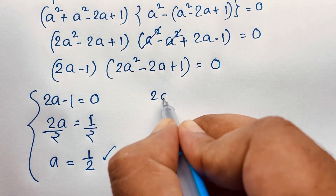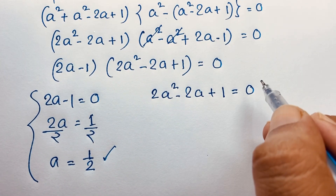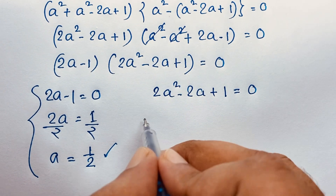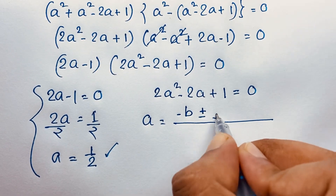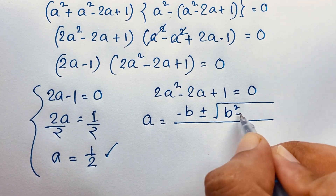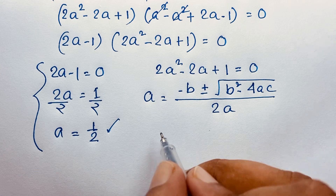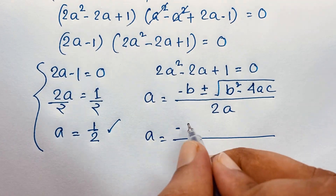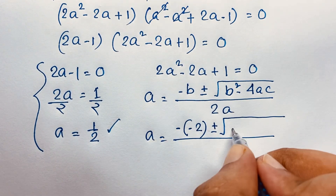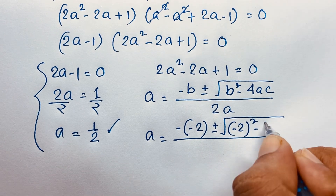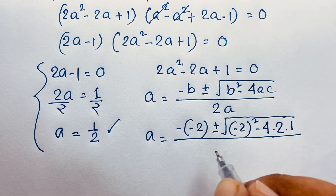Our other case gives 2a squared minus 2a plus 1 equal to 0. At this moment we apply the quadratic formula: a is equal to minus b plus or minus square root of b squared minus 4ac, all over 2a. Applying this formula here, b is negative 2, so minus b is positive 2, plus or minus square root of b squared, which is minus 2 whole squared. Minus 4ac, where a is 2 and c is 1, over 2a.